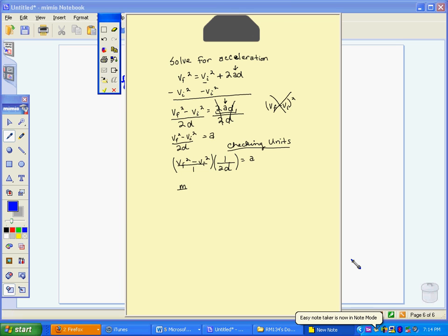Final velocity is going to be in meters per second. Initial velocity would be in meters per second. Distance is going to be in meters. Now, when you square this term, you're going to get meters squared over seconds squared minus meters squared over seconds squared.